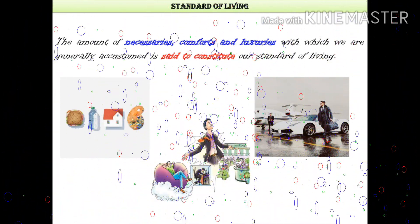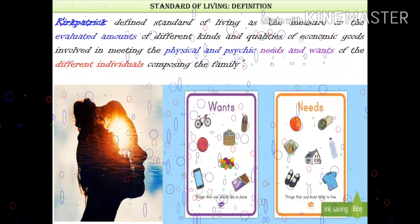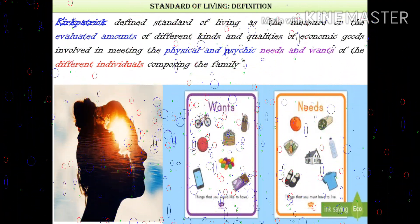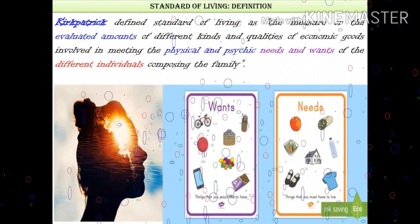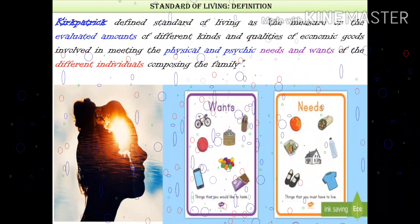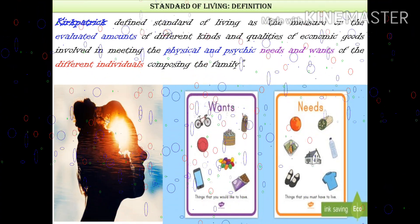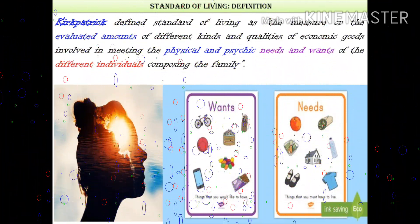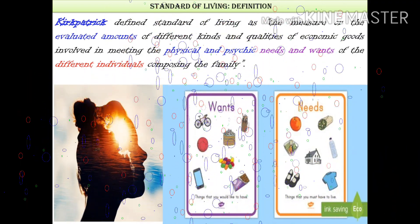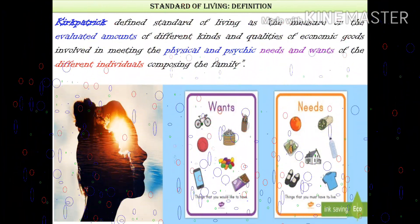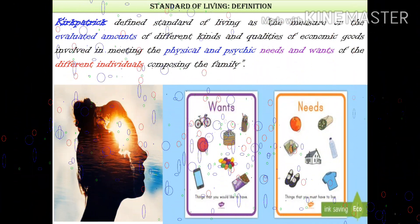Generally, accustomed is said to constitute our standard of living. Standard of living is defined as the measures that evaluate the amount of different kinds and qualities of economic goods involved in meeting the physical and psychological needs and wants of individuals composing the family. Wants are the things that you would like to have, while needs are the things that you must have to live — that is the most important thing about needs.